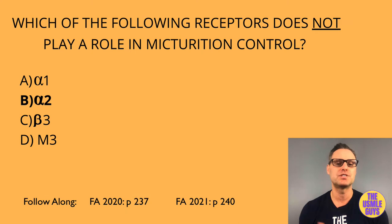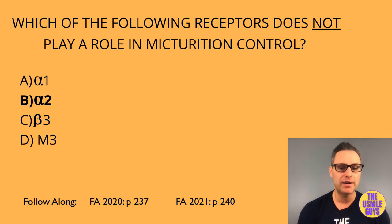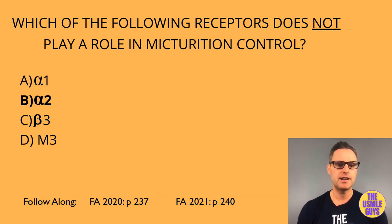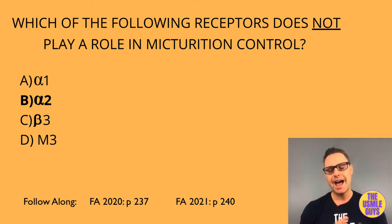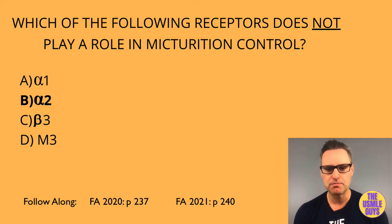We can use medications to stimulate bladder receptors to alter function. A sympathomimetic drug activating the beta-3 receptor communicates with the hypogastric nerve, causing relaxation of the detrusor muscle and increasing bladder capacity — so sympathetic stimulation means increased urinary retention. On the other hand, a muscarinic agonist like bethanechol can stimulate the M3 receptor at the pelvic nerve terminal, causing the detrusor to contract and increasing bladder emptying.